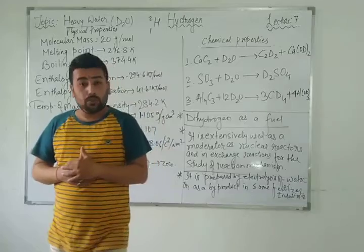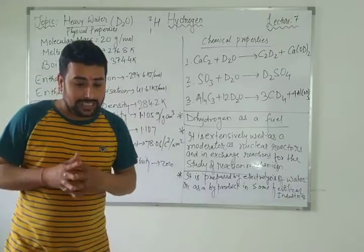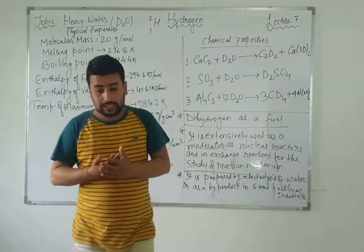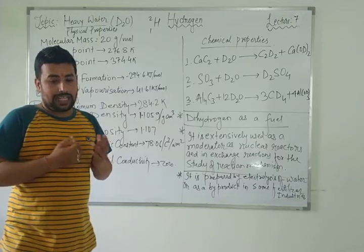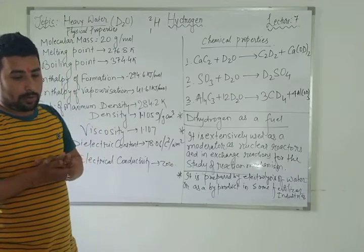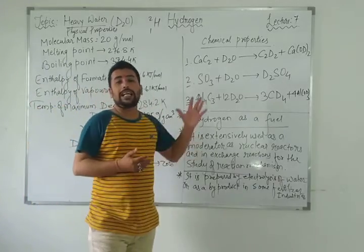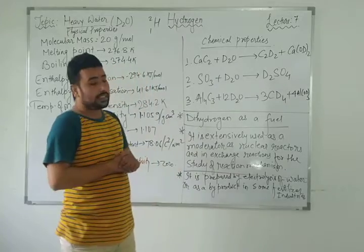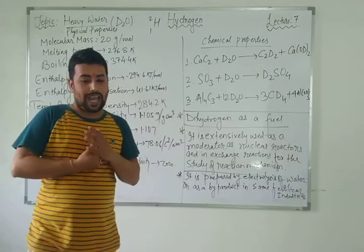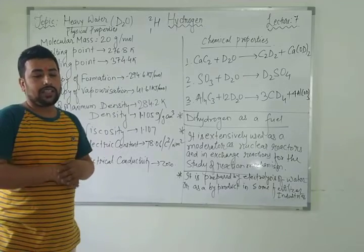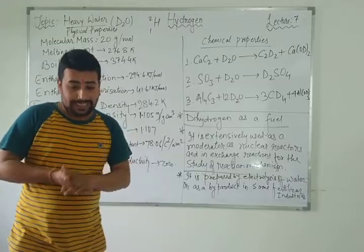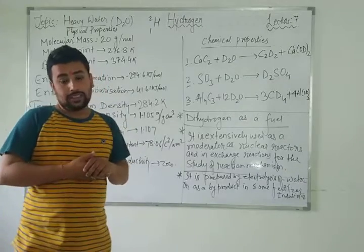Dihydrogen is used as a fuel. It releases large quantities of heat on combustion when reacted with oxygen. We can compare the energy released by combustion of fuels like dihydrogen, methane, and LPG. Deuterium oxide is also used as an energy source — when burned it gives a large amount of energy. These are the key uses.